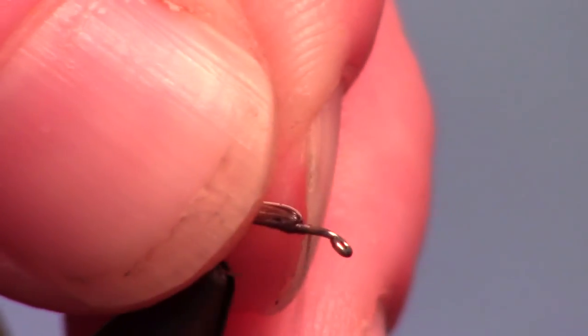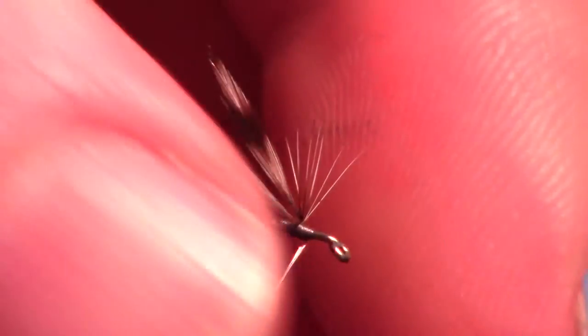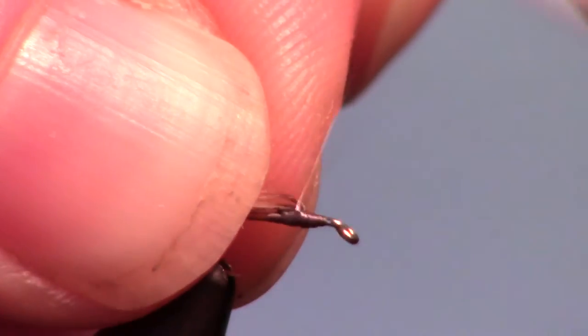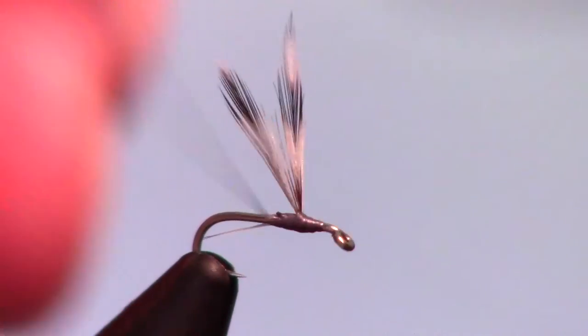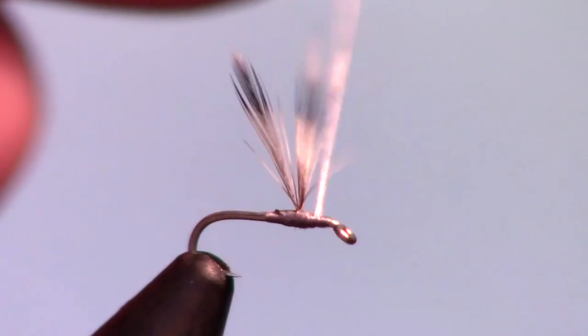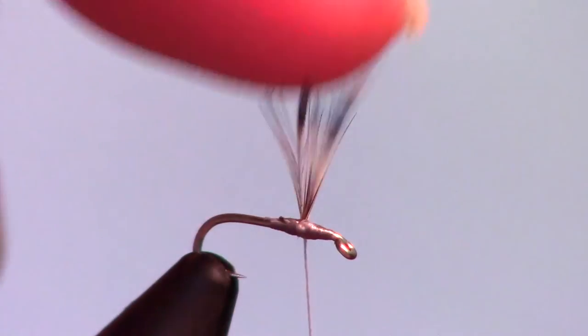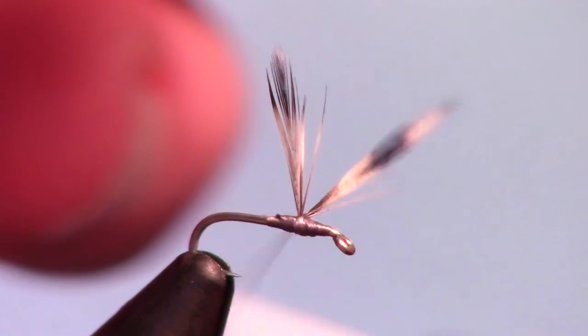Now pull the feathers back and build a small dam in front of the feather tips till they stand straight up. Then make a few wraps in between the two feathers with X wraps to separate them a bit.